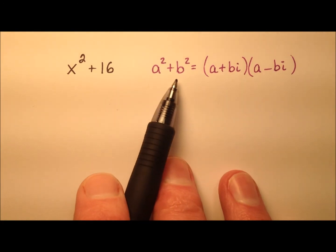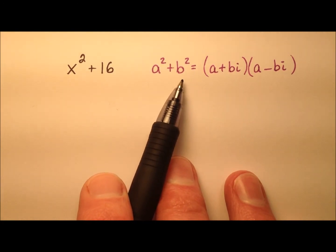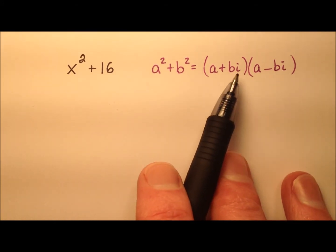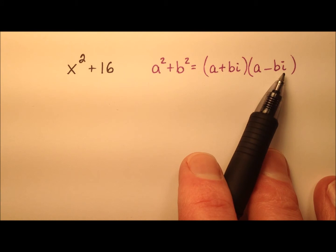So remember that sum of squares is a lot like difference of squares, except of course we have an addition instead of a subtraction, and also we have imaginary numbers in our factorization.